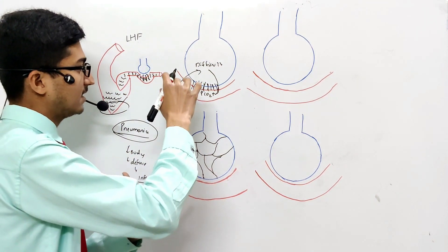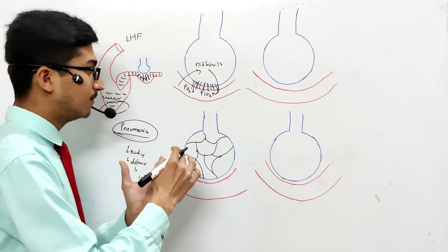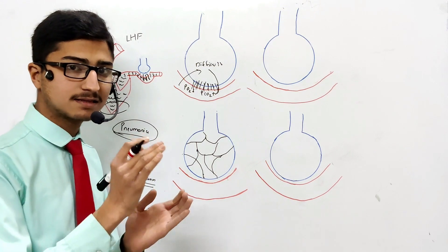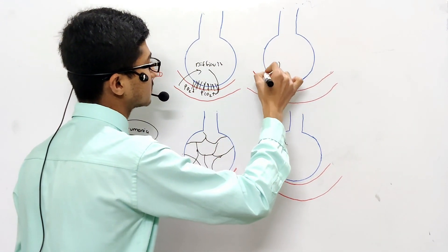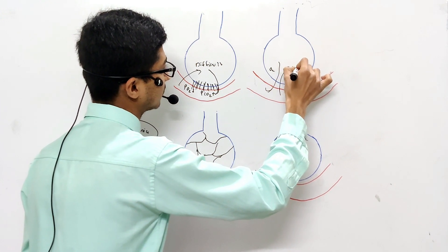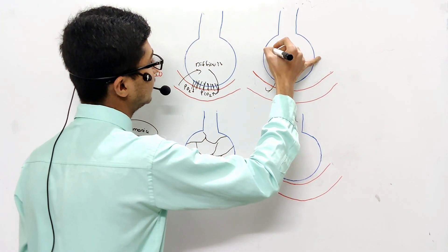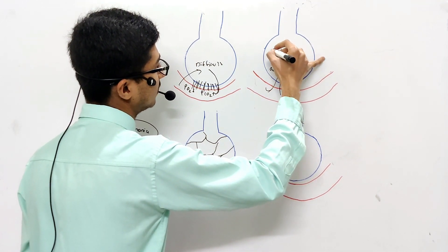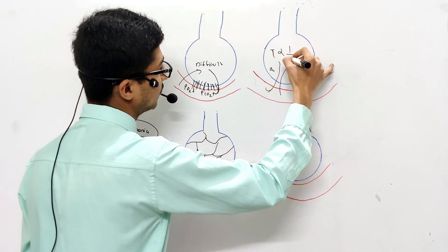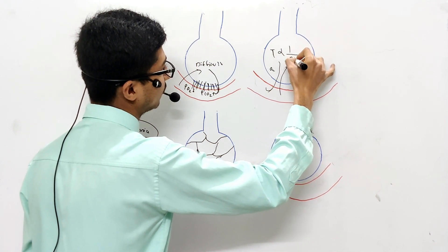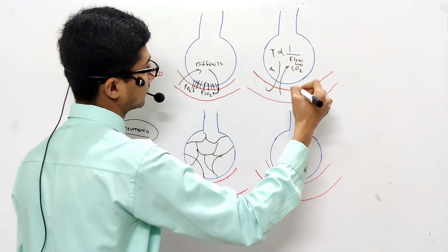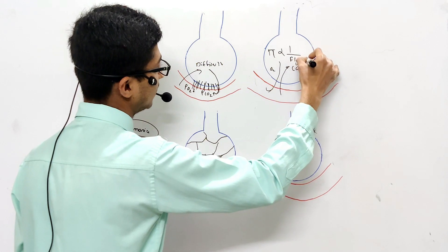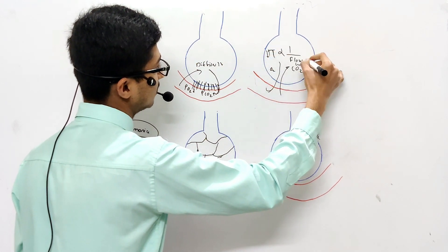As the membrane is thicker, the exchange will be less. This gives us the relationship: thickness is inversely proportional to the flow of gas. If the thickness is more, the flow will be less, and if the thickness is less, the flow will be more.